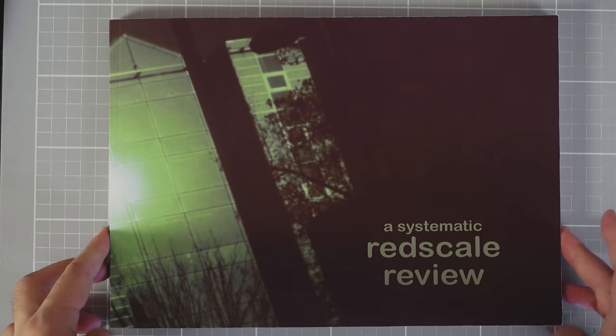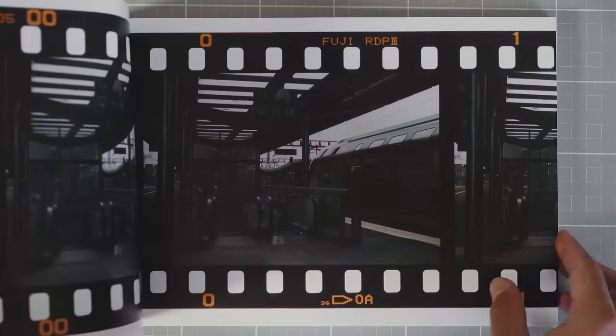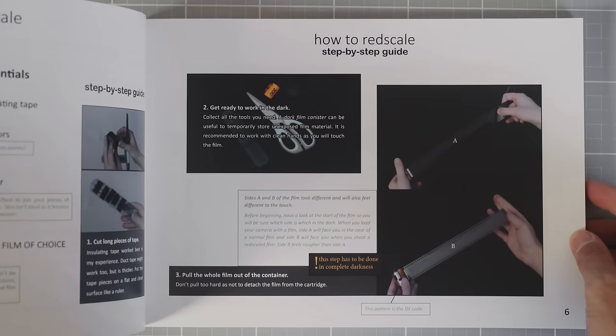I'll be honest — I have not been taking in my fair share of photo books this year. This might be the last year I do this category. That being said, I do want to give a shout out to a photo book that did something super creative: A Systematic Red Scale Review by Lena Shack. It's basically like a farmer's almanac except it's a compendium of red-scaled film stocks. In very simple terms, red scaling is basically just shooting your film backwards — flipping your film over and shooting from the back to the front.